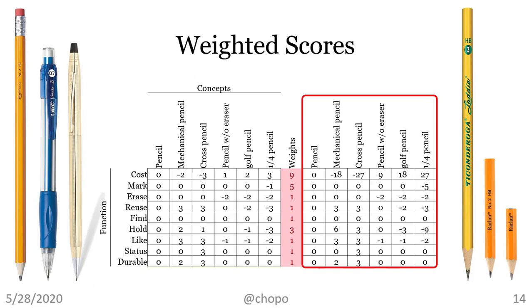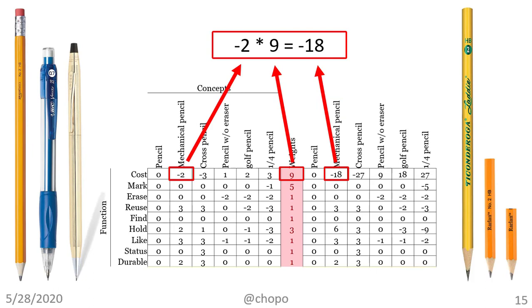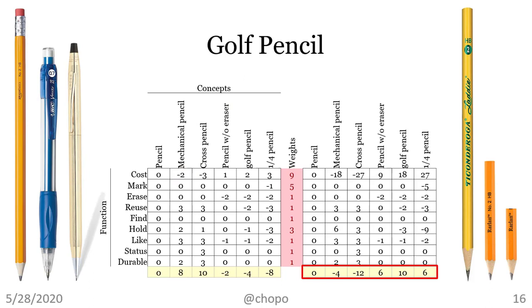Now, multiply the matrix on the left by the weights and you will get the matrix on the right. Let's do one as an example. Minus two multiplied by nine equals minus 18. The rest are the same. Now, who's the winner now?